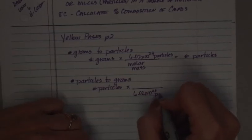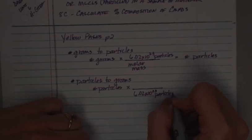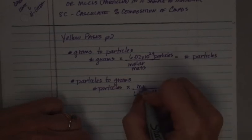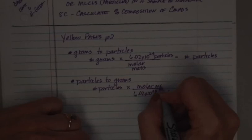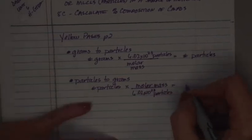Always. They're exactly equal to each other. You have equivalences that way. In this case, I want my particles to cancel out, so I'm going to put them on the bottom. 6.02 times 10 to the 23rd particles. I want my answer in grams, so I want my molar mass, which is in grams, mass is always in grams, on top. And this will give me the number of grams.